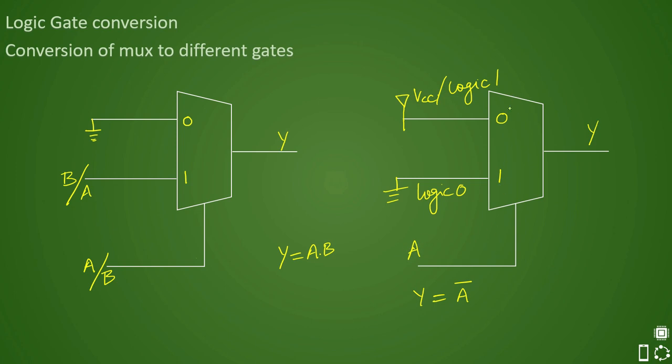So that depends on your A. If your A is connected to zero, that means A is zero. Select line is zero, so this will give you one. And if your select line selects one, that means you will get zero. So that is how you will always get a complemented select line. And that is a NOT gate.